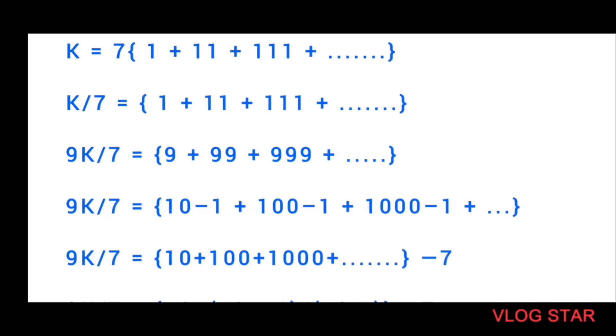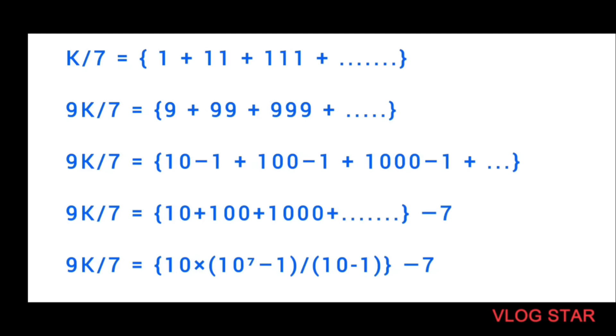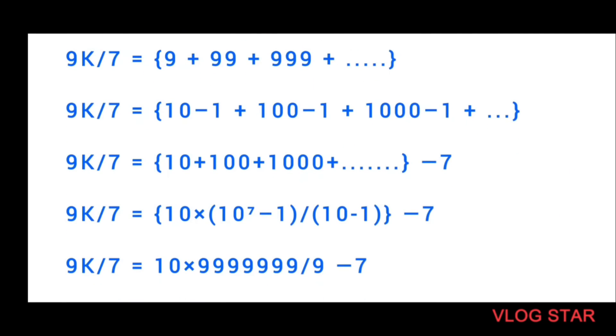The ones are going to be subtracted seven times, so I can write it as minus 7. And 10 plus 100 plus 1000 and so on till 10 to the power 7 because of seven zeros. Using the GP formula, I calculated the sum of these seven powers of 10.